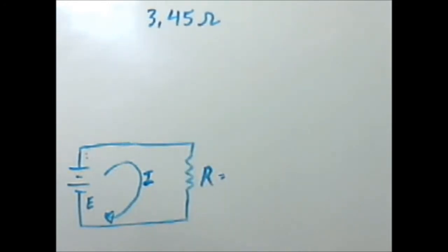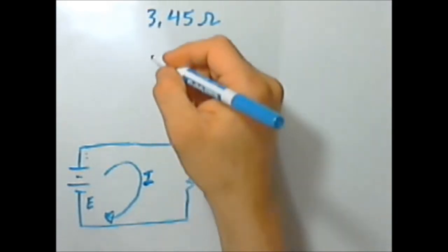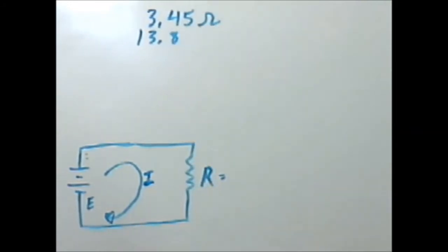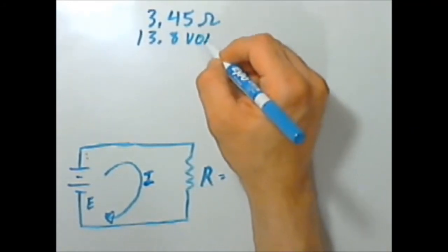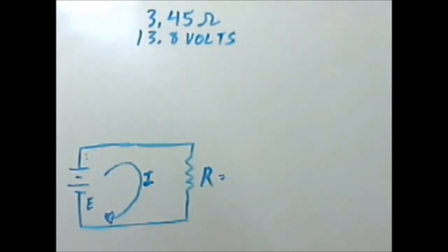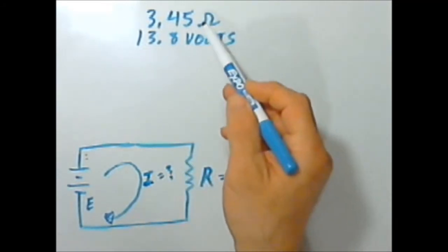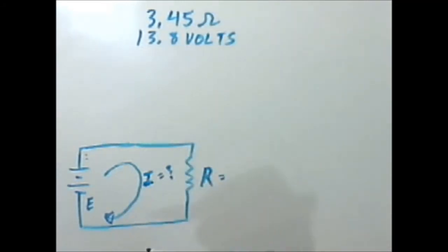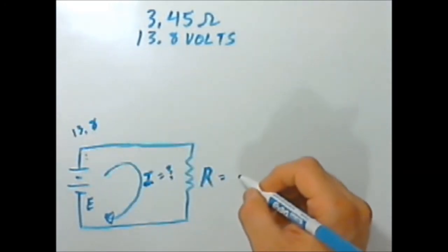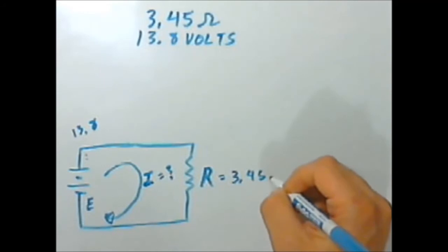We've got 3.45 ohms as your hot resistance. The nominal operating voltage of a car electrical system when the engine is running is about 13.8 volts. And yes, we know that a car battery puts out 12 volts normally, but the alternator pushes that up to 13.8 volts. And that's what we're going to use because normally you're running your car if you're running the headlights. So how much current is this thing drawing at 13.8 volts and a resistance of 3.45 ohms?